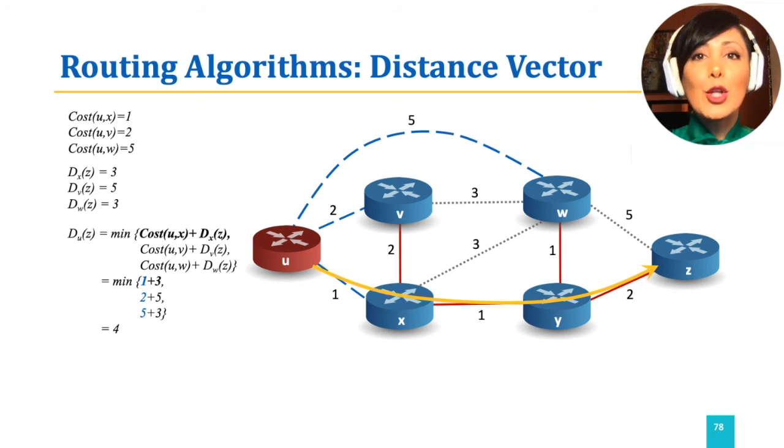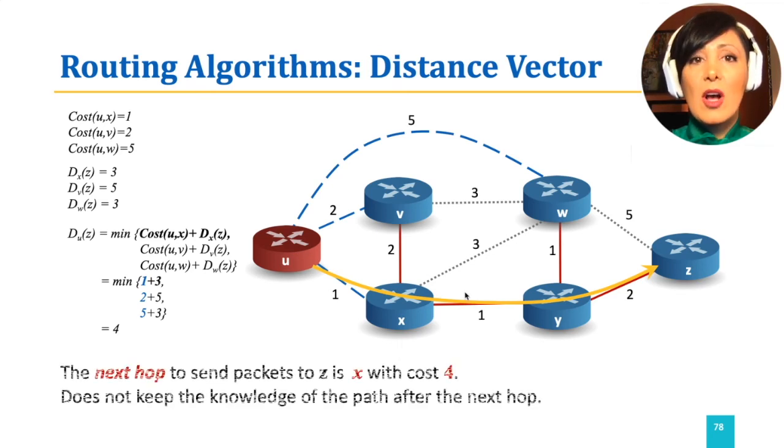Therefore, node u will record that the next hop to send packets to z is x, which costs 4. It does not have any knowledge of the path other than the next hop.